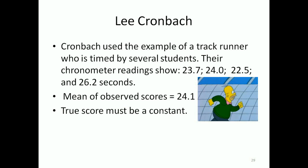So Cronbach used the example of a track runner who is timed by several students. Their chronometer readings show 23.7, 24.0, 22.5, and 26.2 seconds, and there's a mean of 24.1. Now we know that these are the measurements of one run so the true score must be the real score of the runner, and that must be a constant.